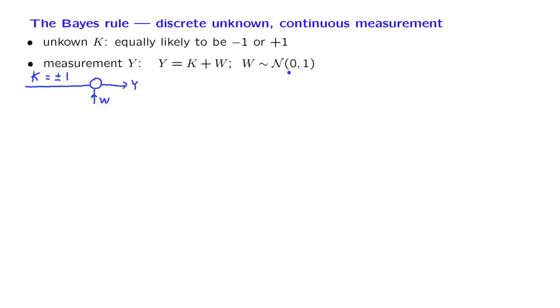The assumption that we will make about the noise is that it is a standard normal random variable. So suppose that we observed a specific value for the random variable Y, we want to make a guess about the random variable capital K. Of course, there's no way to guess with complete certainty. The only thing that we can say is to determine how likely it is that a 1 was sent, as opposed to how likely it is that a minus 1 was sent. How do we approach such a problem?